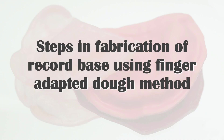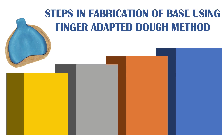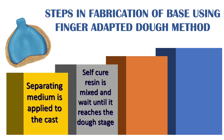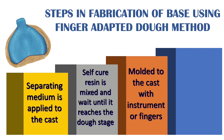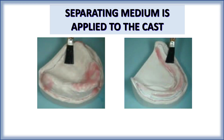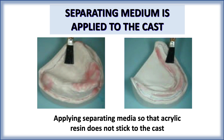Steps in fabrication of record base using the dough method: the first step is the same — apply separating media to the cast. Then self-cure resin is mixed and we wait until it reaches the dough stage. The purpose of separating media is so the acrylic resin does not stick to the cast, allowing easy removal of the record base.